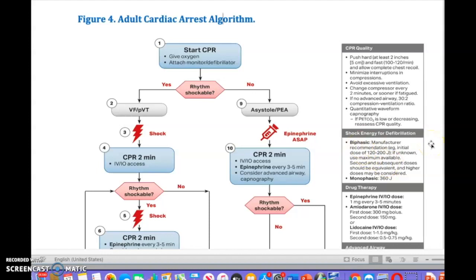Now let's say they are in V-tach or V-fib. You have to shock them. Those are shockable rhythms. What do we do? Manufacturer recommendation: initial dose of shock is 120 to 200 joules. If unknown, use maximum available. Second and subsequent doses should be equivalent and higher doses may be considered. We know monophasic is 360 joules.